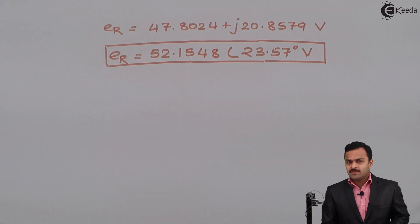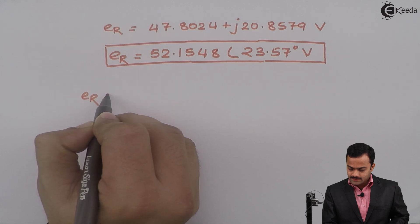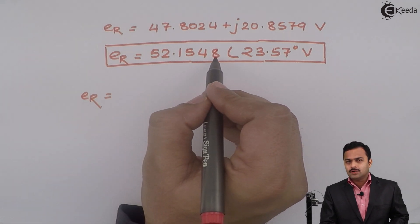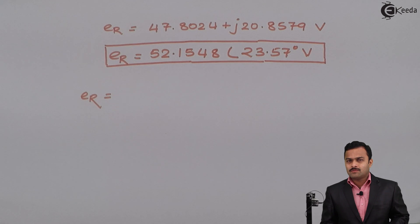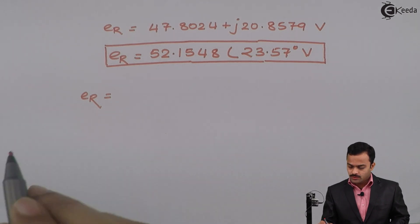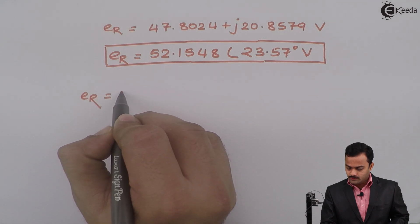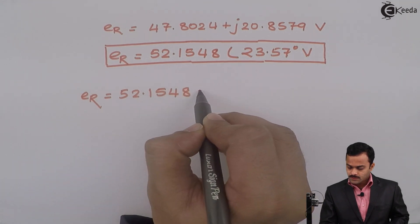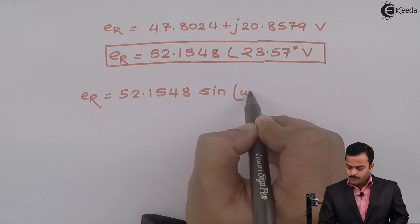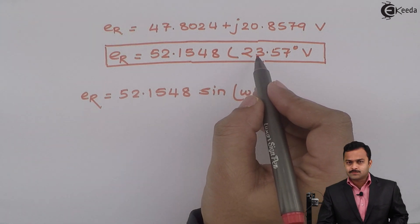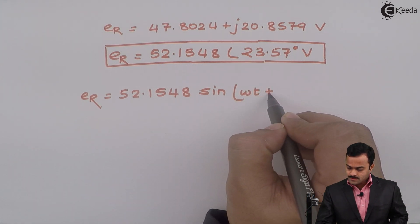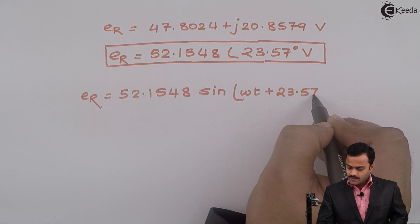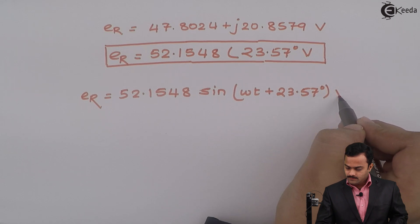Once you got the answer in phasor form, it will be very easy to write in equation form. How? I can say ER is nothing but this is a maximum value, because everywhere we have considered maximum value for E1, E2, E3, and E4. So I can write ER = 52.1548 sin(ωt + 23.57°) volts.